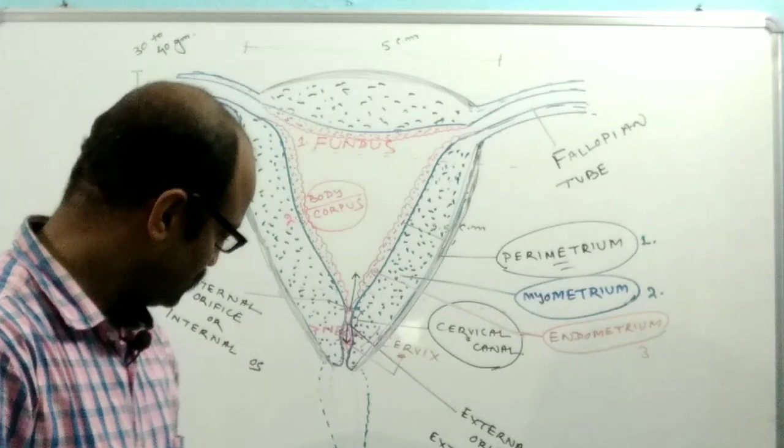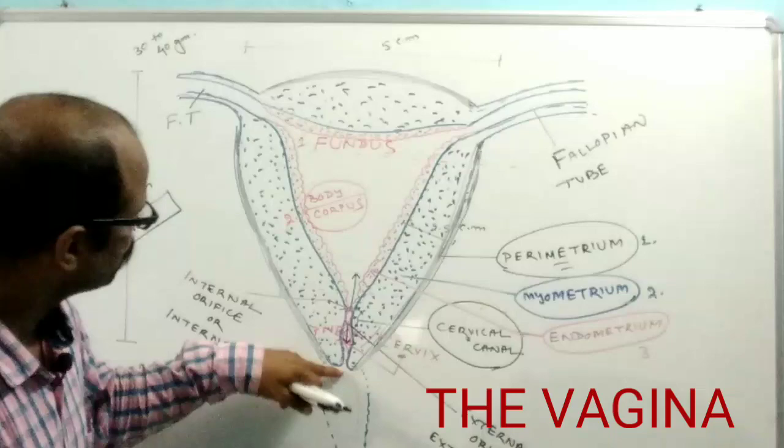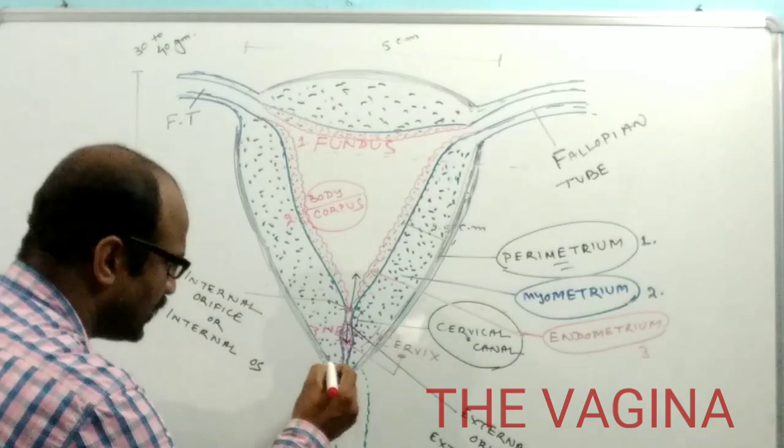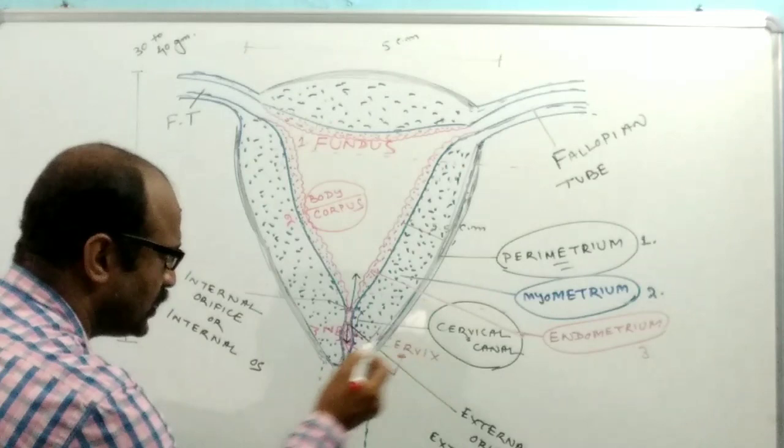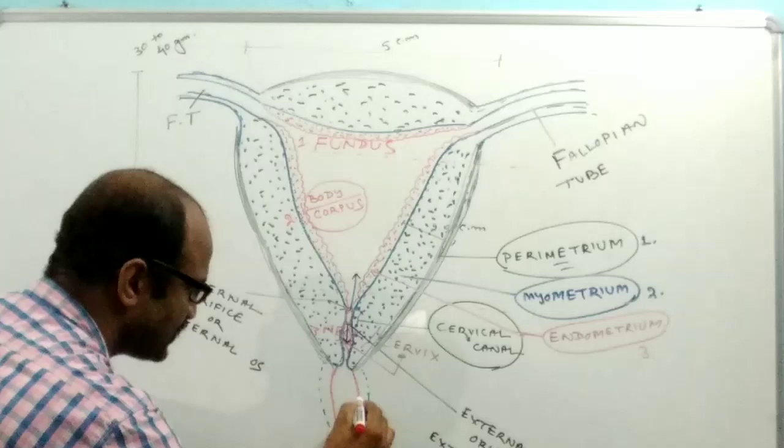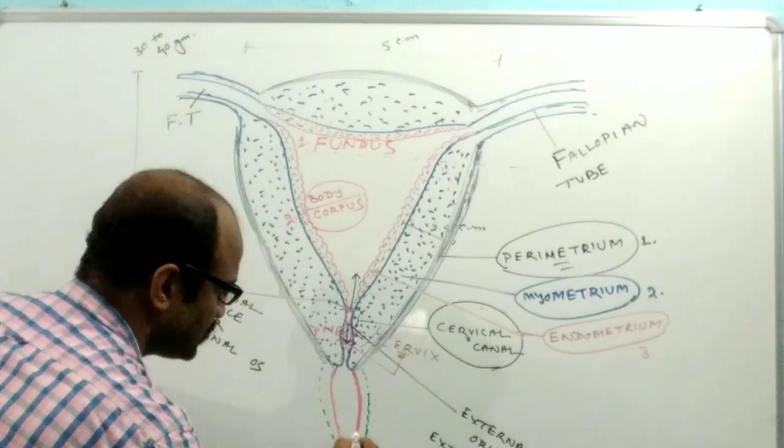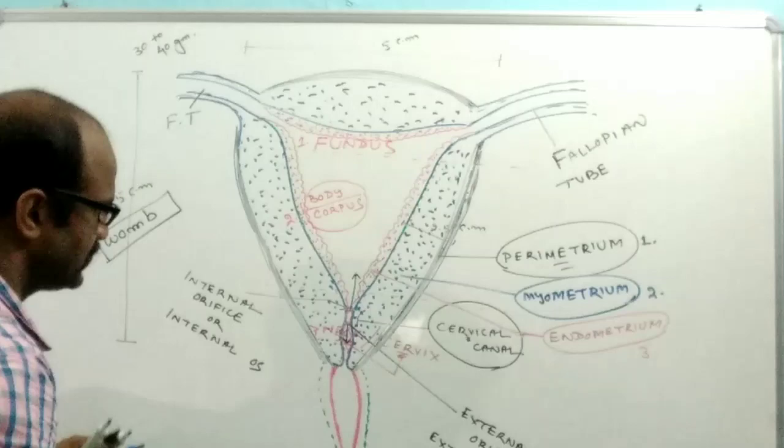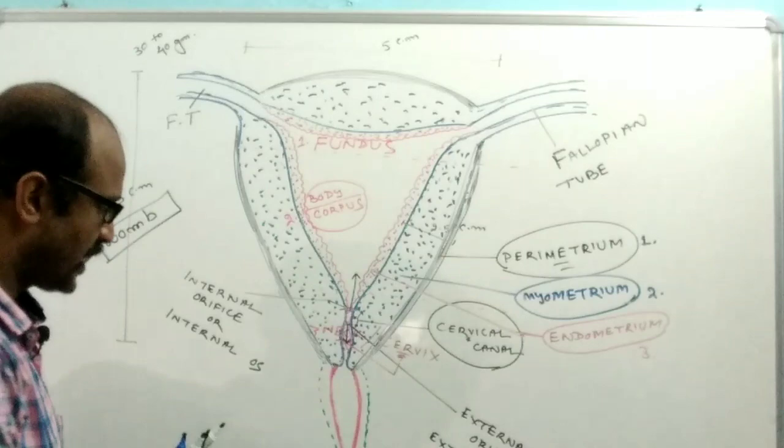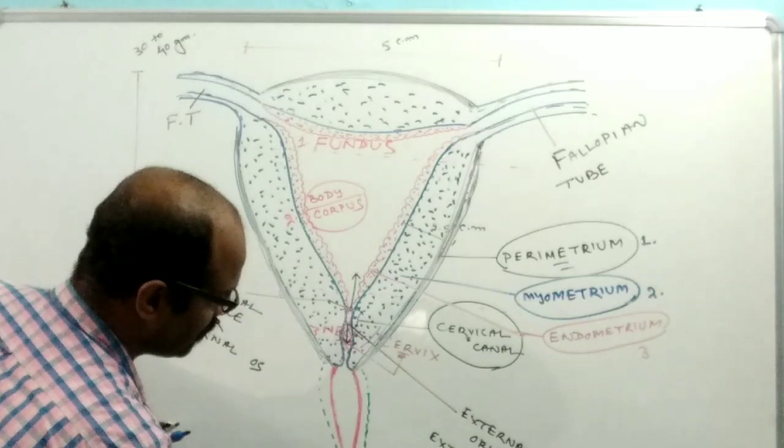Now come to the vagina of the female. From the lower portion of the uterus, from the cervix, there is the opening of the vagina. The vagina starts from the lower portion of the cervix and extends to the outside, opening through the vaginal orifice.